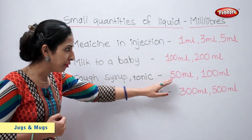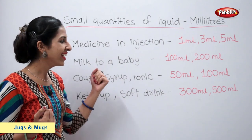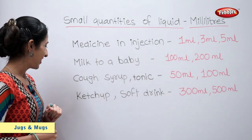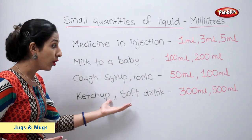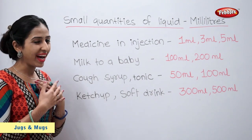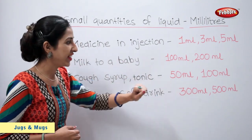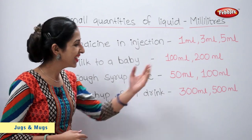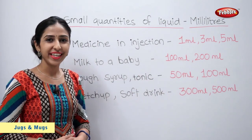Cough syrup or tonic comes in 50 ml or 100 ml. Ketchup or soft drink that we buy comes in 300 ml or 500 ml.